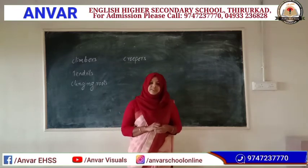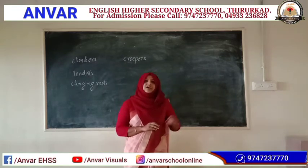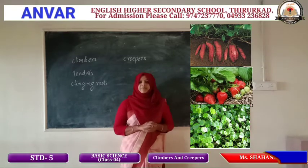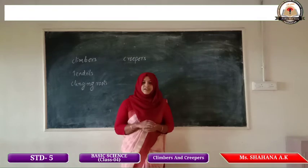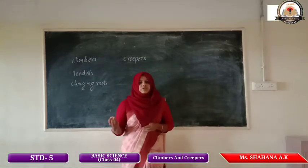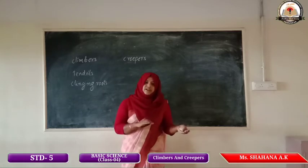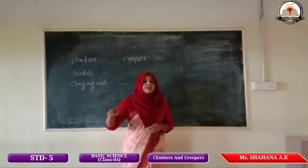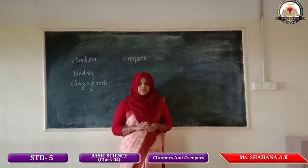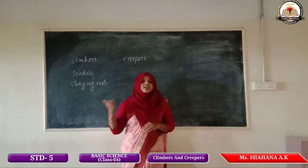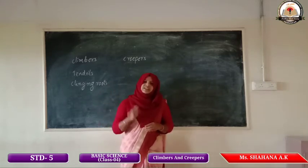Can you give some examples for creepers? Examples for creepers are sweet potato, strawberry, hydrocotin, etc. Creepers are also weak-stemmed plants but they creep on the ground itself, whereas climbers climb on other plants and have tendrils or clinging roots to attach onto other plants.